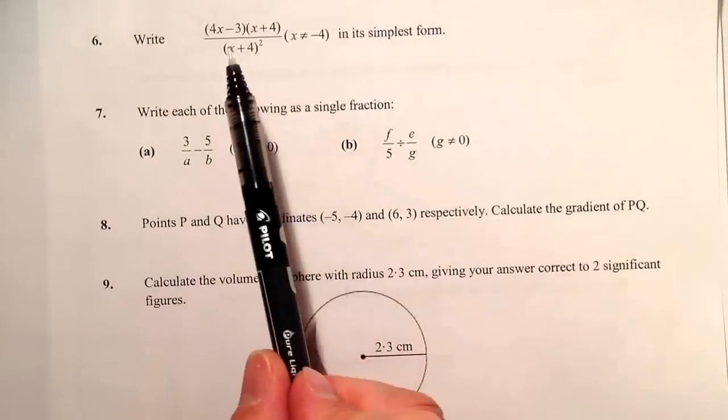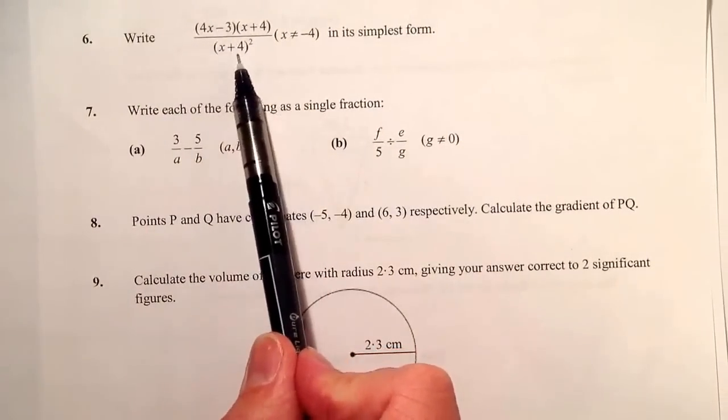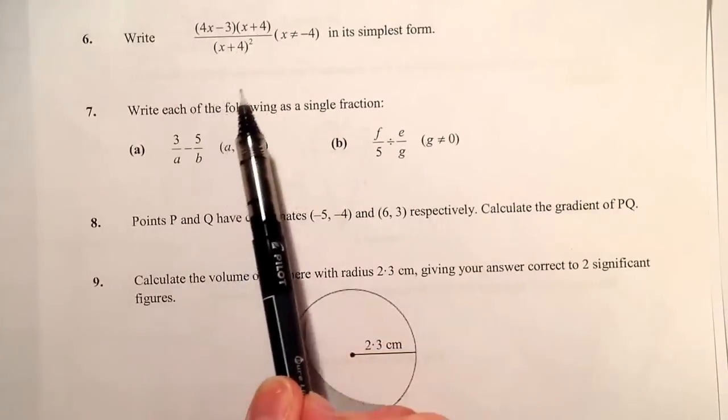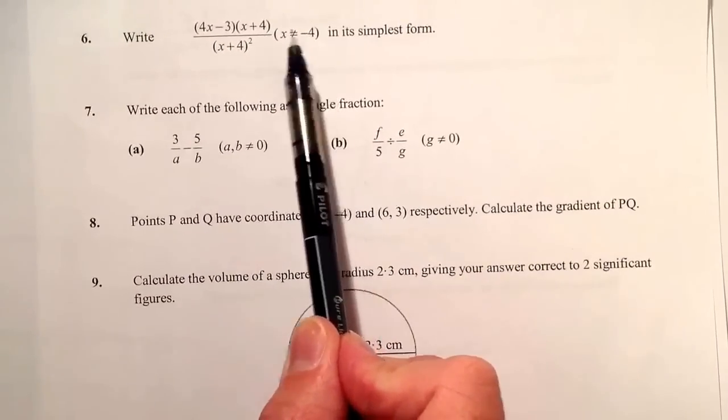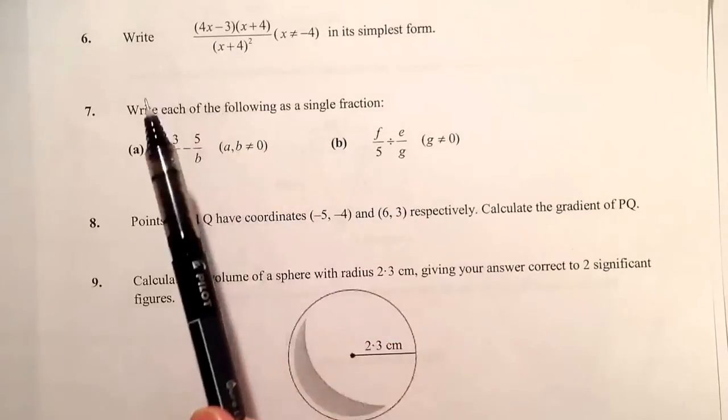So what I've got is a more complicated fraction with some brackets in it here. This part here tells me that x doesn't equal minus 4 and shouldn't really be included in the working that you're going to do.